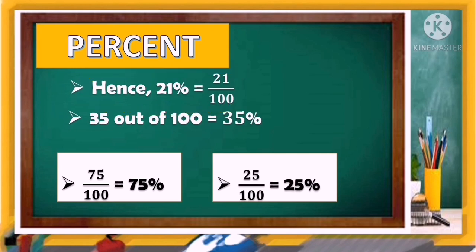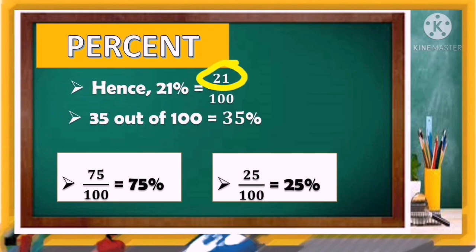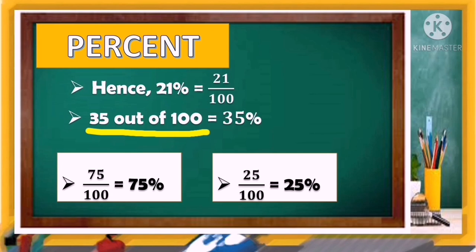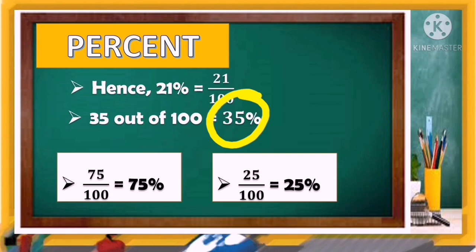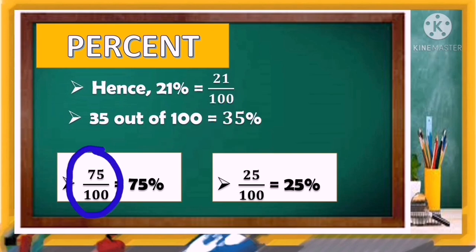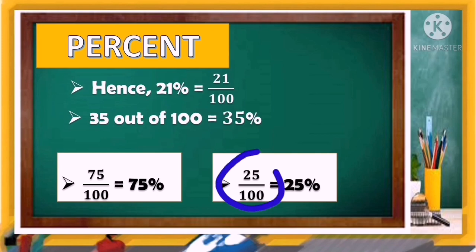For example, 21 percent is equal to 21 over 100 — 21 is the numerator and 100 is the denominator. Also, 35 out of 100 has a percentage of 35 percent. Another example: 75 over 100 is 75 percent, and 25 over 100 is 25 percent.